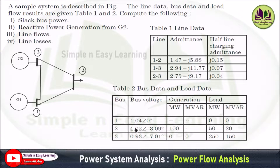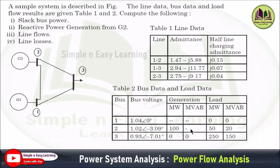Looking at the data, bus 1 is a slack bus since voltage and angle are specified and power is not specified. Bus 2 is a generator bus since megawatt power is given but MVAR is not given. Bus 3 is a load bus since both megawatt and MVAR power are specified in the load data.